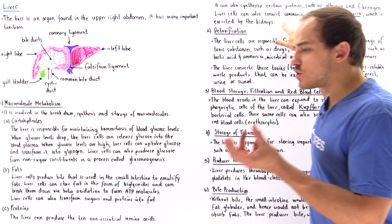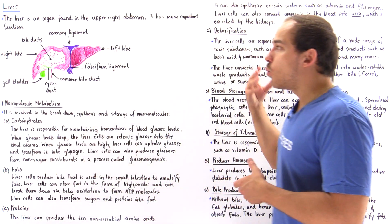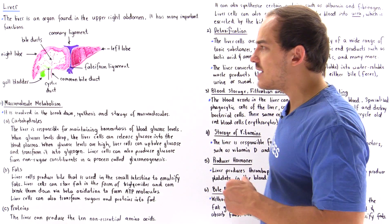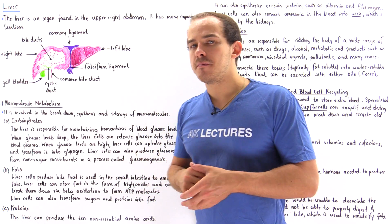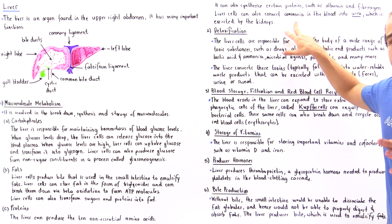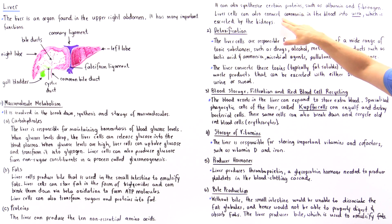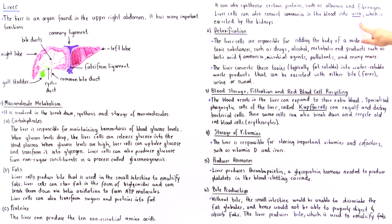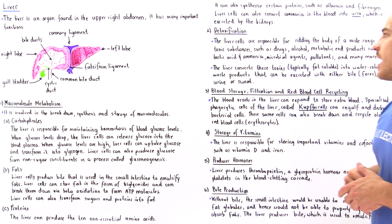When glucose concentration in the blood is very low, liver cells can break down proteins into amino acids and use those amino acids to form ATP molecules. In the process, we produce ammonia, which is a toxic substance. The liver transforms ammonia into urea, which is excreted by the kidneys outside of our body.